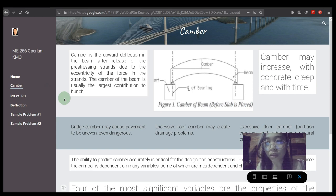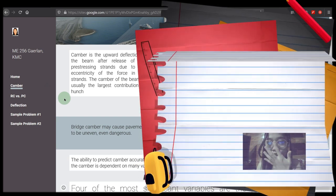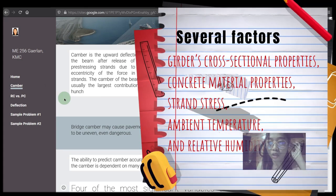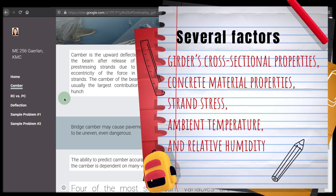it is time-dependent deformation due to sustained load and is indicated when strain in a solid increases with time while the stress producing the strain is kept constant. Camber increased stress concrete girders is affected by several factors such as the girder's cross-sectional properties, concrete material properties, strength stress, ambient temperature, and relative humidity.